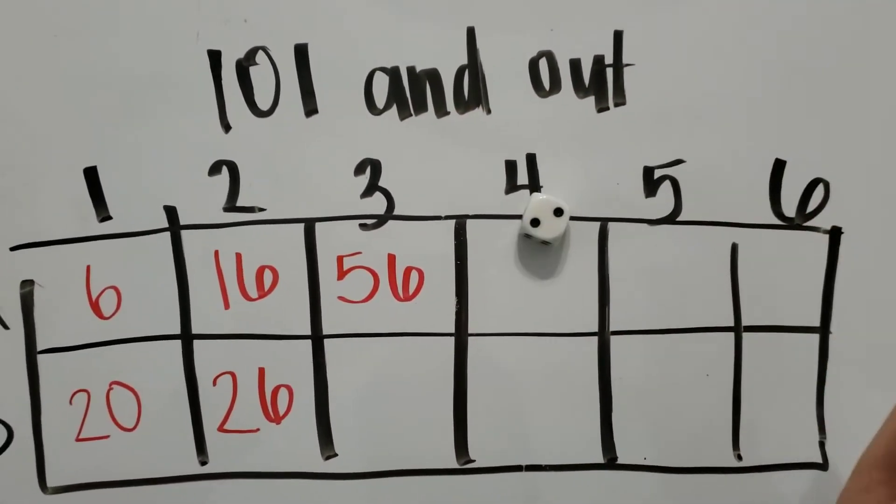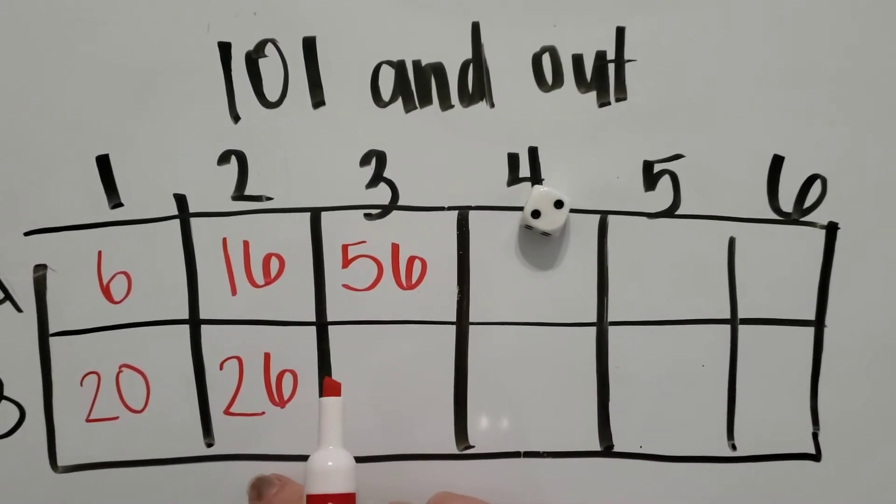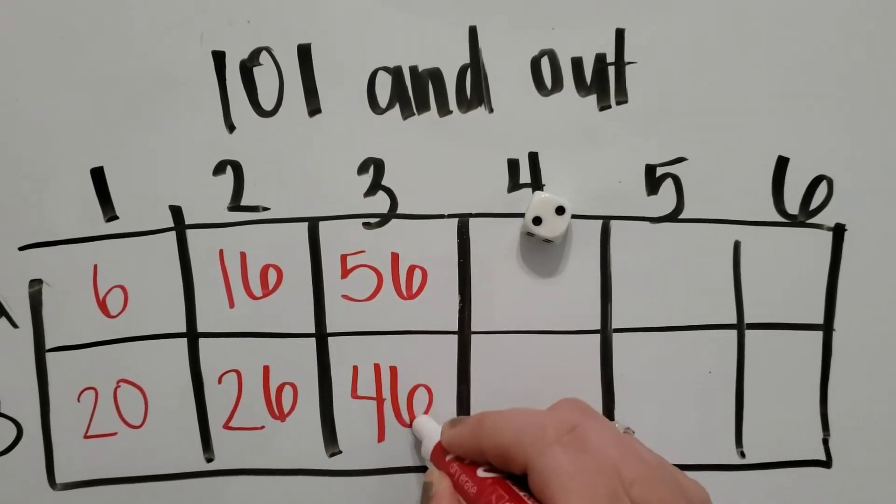And then the next team would go and roll a two. Two can either be two or 20. Now, I'm at 26. So I'm going to make that 20. And 26 plus 20 would be 46.